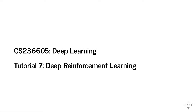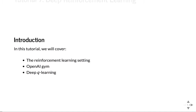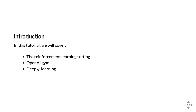Okay, hi. So let's start tutorial 7. Today we're going to talk about deep reinforcement learning, which you should have already watched in the video lectures. Specifically, we'll cover theory reminders about the setting of reinforcement learning, a very cool and useful framework for doing RL called OpenAI Gym, and then we'll use OpenAI Gym to apply it to the problem of deep Q-learning for Atari games.